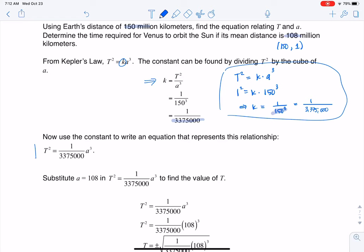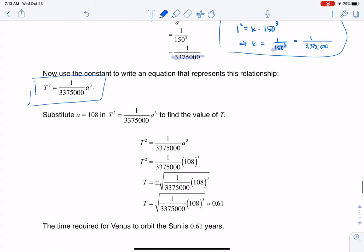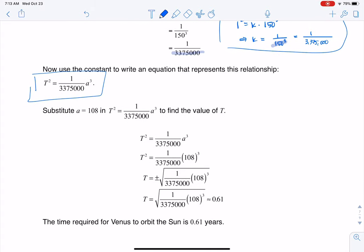So now you see me updating my variation equation with our current version, or not our current version, our value for K. And the next thing they ask us to consider is, hey, can you find the time on Venus if that distance is 108? So what we get to do now is plug in 108 for A. So that's what you see me doing here. Instead of A cubed, you see I have 108 cubed.